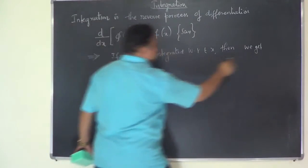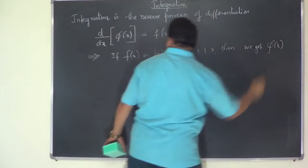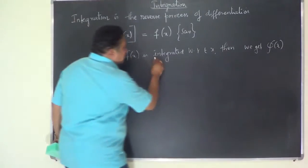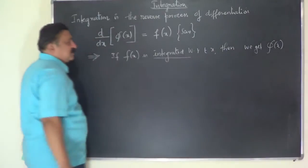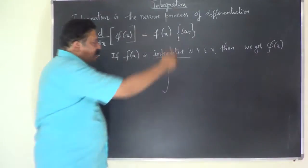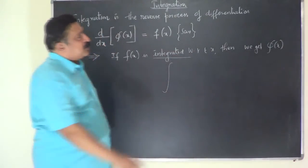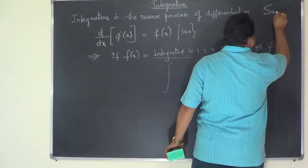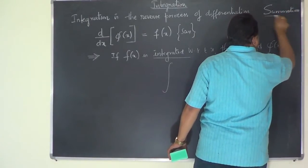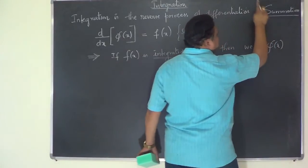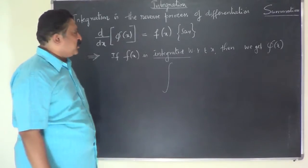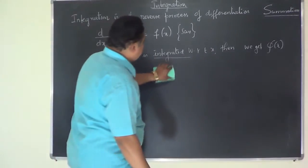The symbol of integration is an elongated S — the English alphabet S. It is an elongated S because integration is summation; the definition of integration is summation, and S is the first alphabet of summation. So an elongated S represents the symbol of integration.